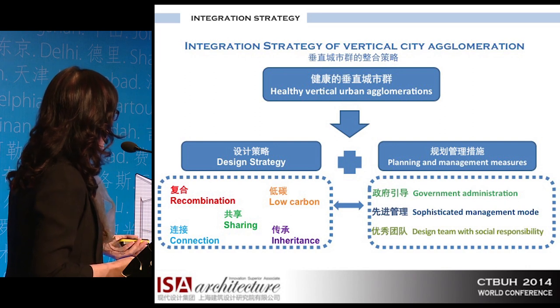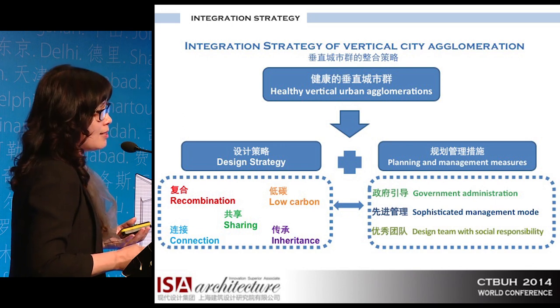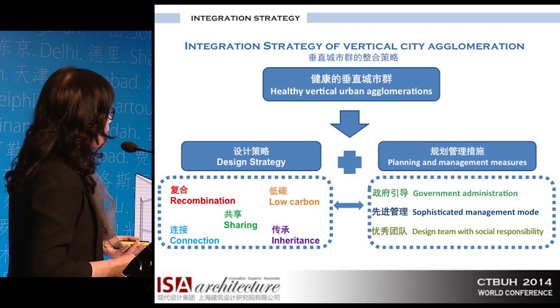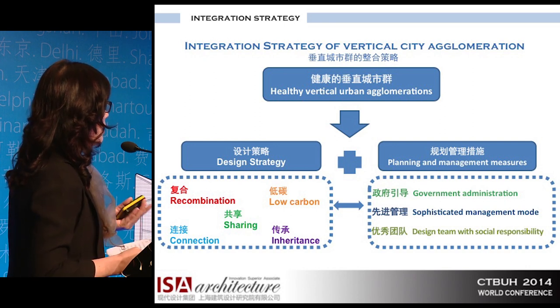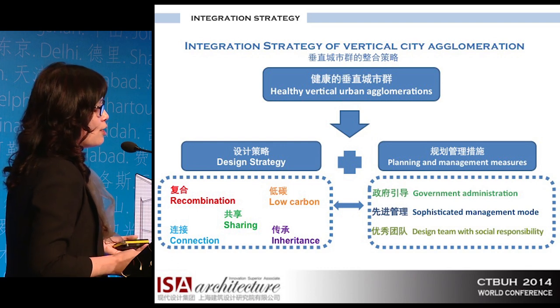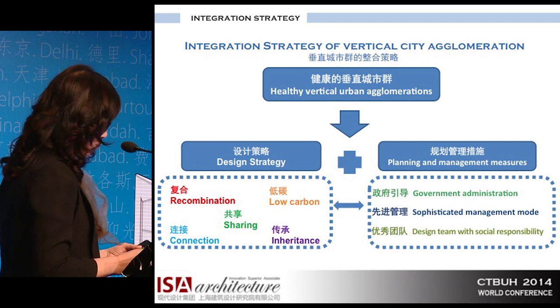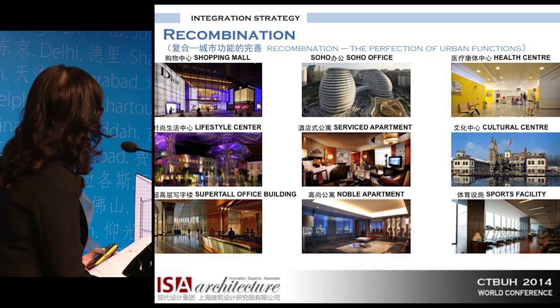We believe a healthy vertical urban agglomeration needs to be more integrated. We need more research and implementation about integration. During the designing stage, we need to have special elements such as recombination, low-carbon sharing, connection, and inheritance. We also need good management and administration, especially in a country like China where development is very fast. It has to be guided by the government and must have sophisticated management teams and models.